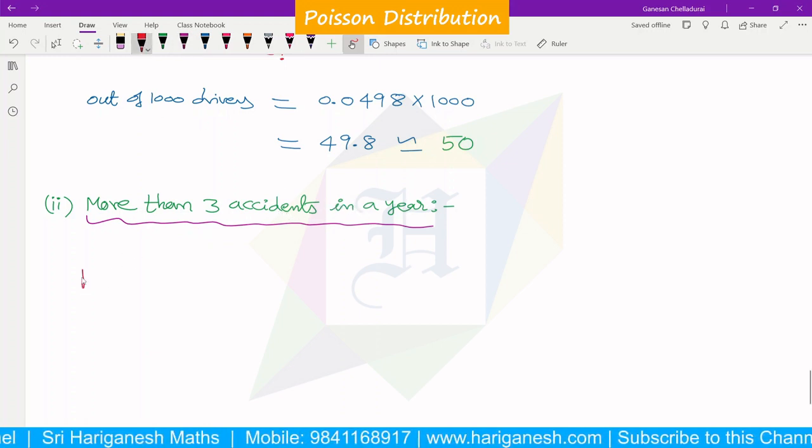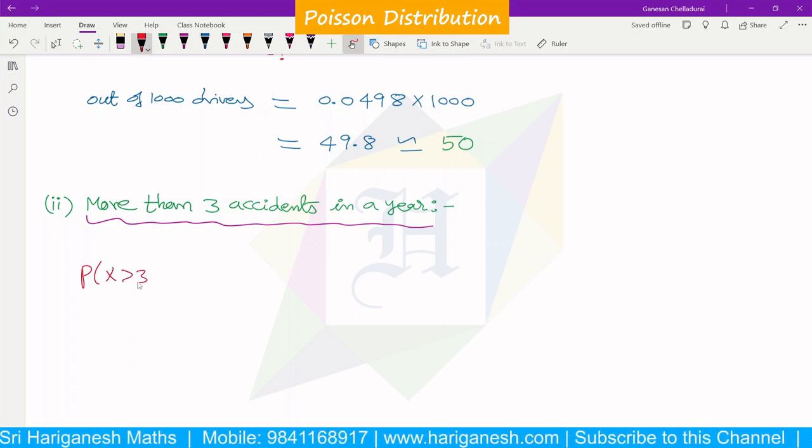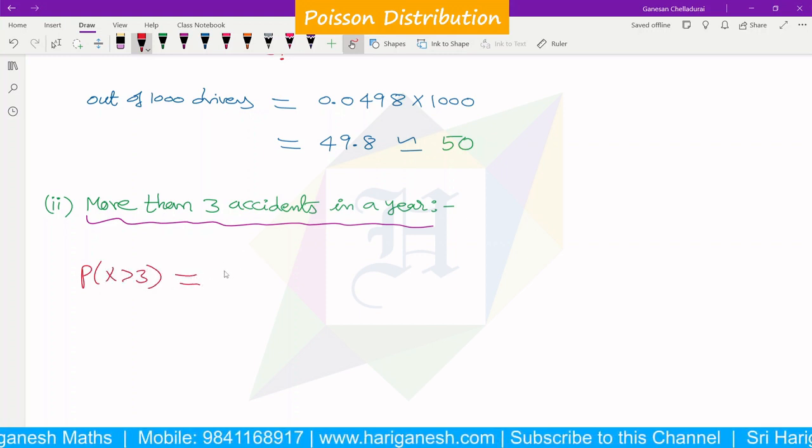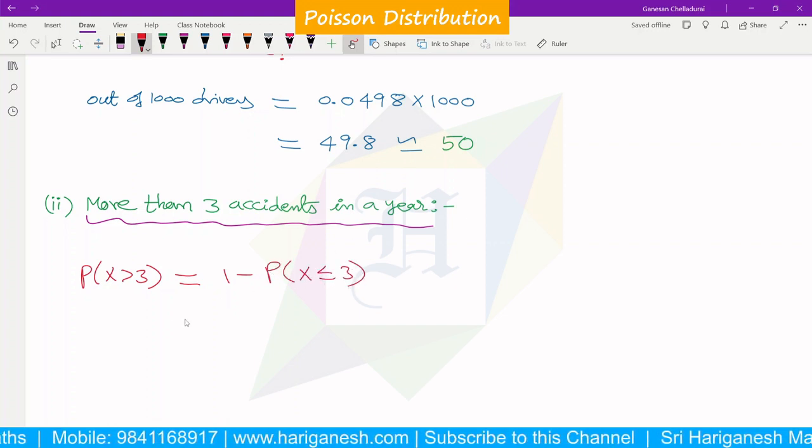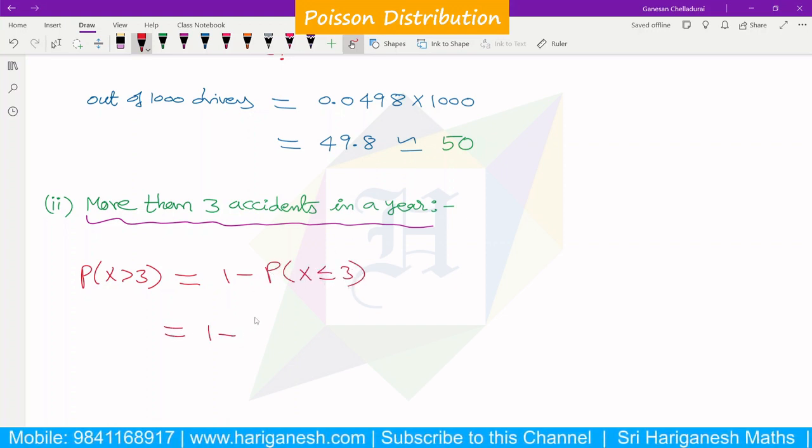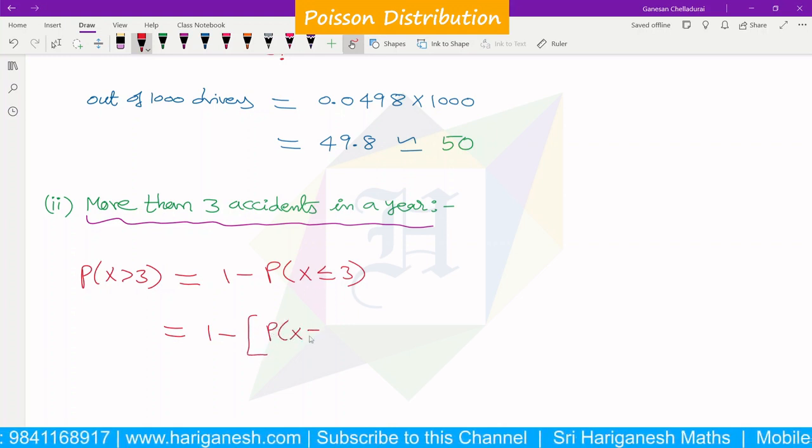So more than 3 means x greater than 3. So we have to calculate P(X>3) which equals 1 minus probability of x less than or equal to 3.